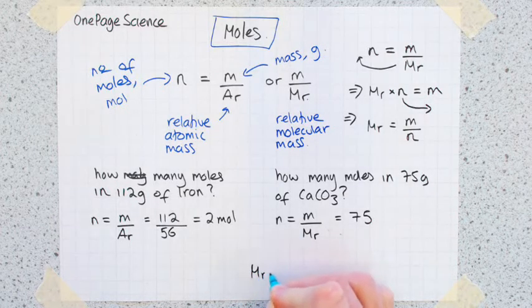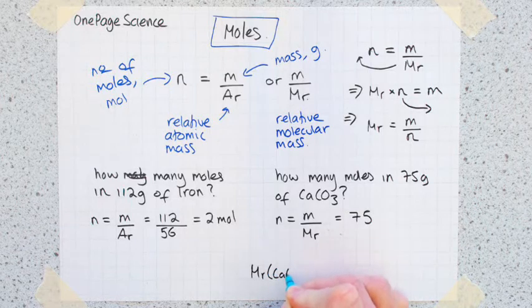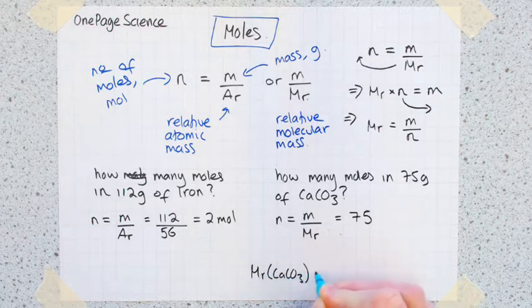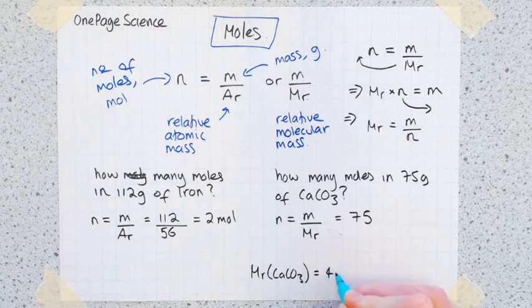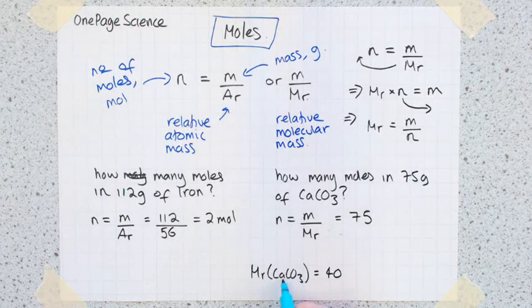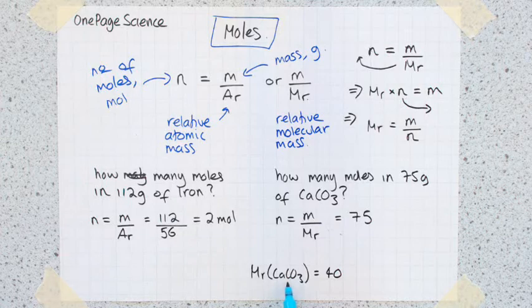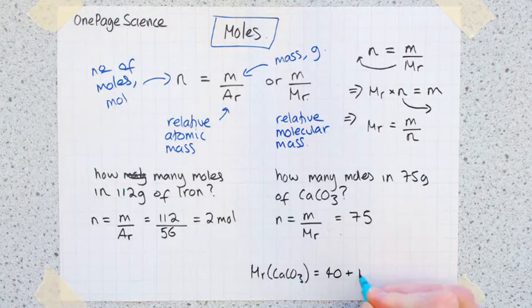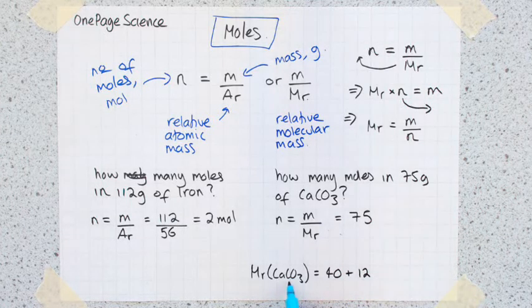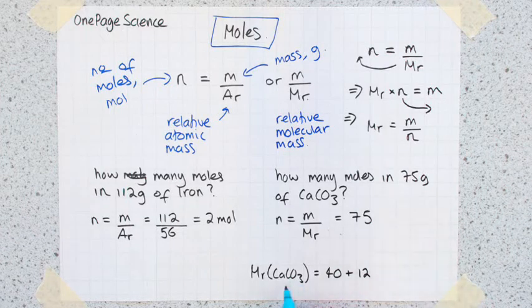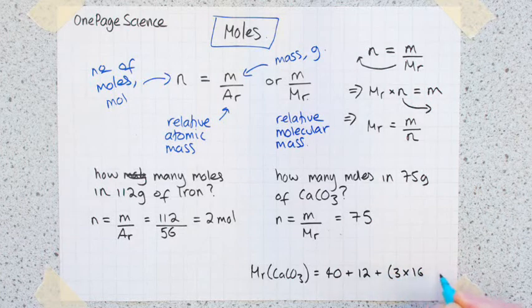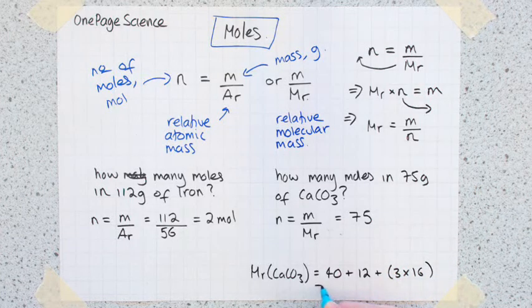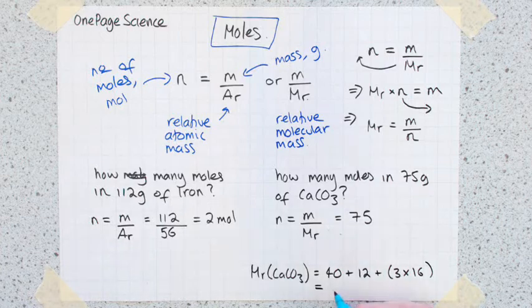The Mr of calcium carbonate: if you look at these values you'll find that calcium has an atomic mass of 40 - we've only got one of them. Carbon has a relative mass of 12 - we've only got one of them. And oxygen has a relative mass of 16, but we've got three of them, so we need to add three times 16. Put that in a calculator and you'll find that comes out to be 100.